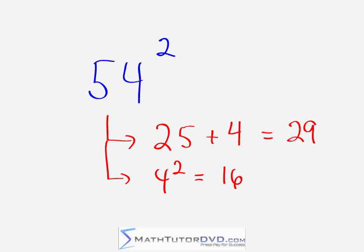All right, so in order to calculate the answer, we just need these two little things that we do in our head, so the answer is going to be 29, 16, 2,916. So that's what you would get if you took in your calculator, 54 times 54, you would see 2,916. See how easy it is.